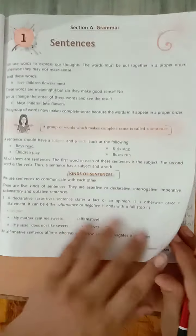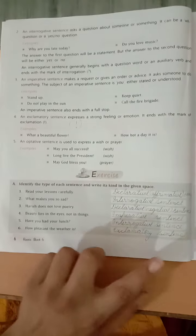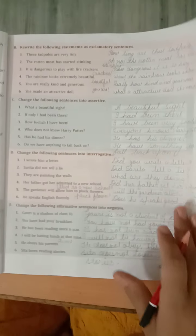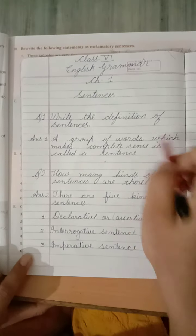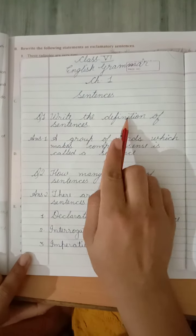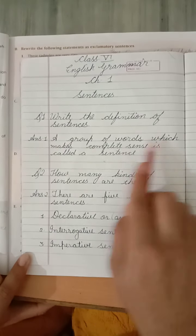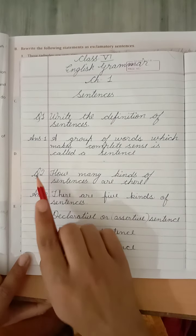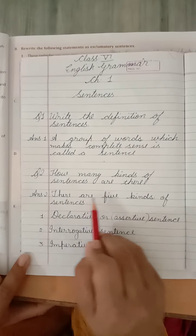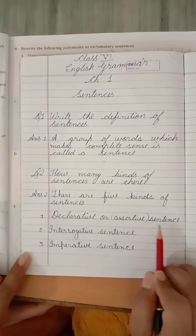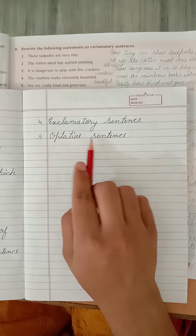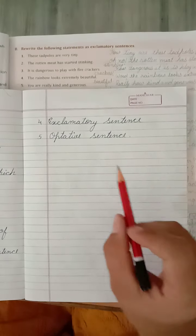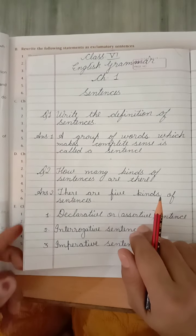Now, today we have completed this chapter explanation and exercise also. So, this you have to fill only in your textbook. You have to fill in your book. Okay. Now, after today's homework is in your notebook. And what is the homework? You have to do this question in your notebook. Chapter number one of English grammar. Sentences. Write the definition of sentence. Answer is: a group of words which makes complete sense is called a sentence. Question number two. How many kinds of sentences are there? There are five kinds of sentences. Declarative or assertive sentence, interrogative sentence, imperative sentence, exclamatory sentence, and operative sentence. This is your homework. This you have to do it in your notebook. Okay. Thank you, students.